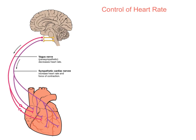The first thing to note is that changes to the heart rate are controlled by what's called the medulla oblongata, located within the brain. So you can see in this picture we've got the brain at the top, and we're going to highlight the region of the medulla oblongata.